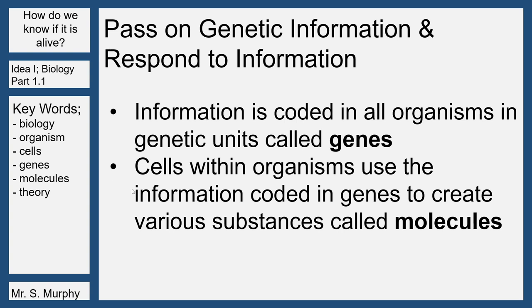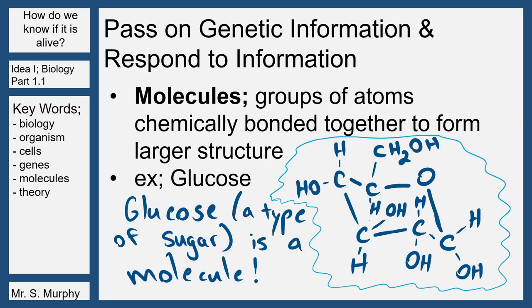Organisms also have to pass on genetic information and respond to general information. The information coded in all living organisms is called genes — these are the genetic units that contain our genetic information coded in all of our cells that we pass down to our offspring. Cells within organisms use this information coded in genes to create various substances, which we call molecules. Molecules are groups of atoms that are chemically bonded together to form larger structures. Here I drew a quick picture of glucose — it's all these carbons and hydrogens and oxygens bonded together. Some molecules are thousands of atoms; some are only three atoms, like water, H2O.